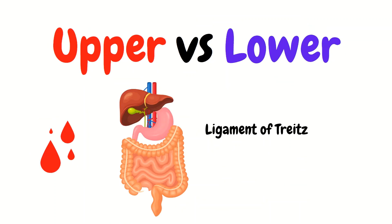So what is a GI bleed? Keeping it simple, it's bleeding from somewhere along the GI tract. Do remember that GI bleeding is not a disease — it is a symptom of a disease. This bleeding in the GI tract gets divided into upper GI bleeding and lower GI bleeding. Know that bleeding from the upper GI is going to be more common, and that upper GI bleeding can at times have a greater mortality than lower GI bleeding.